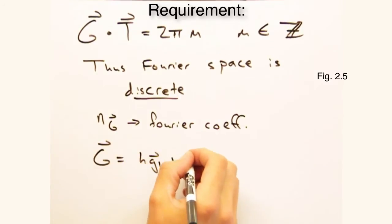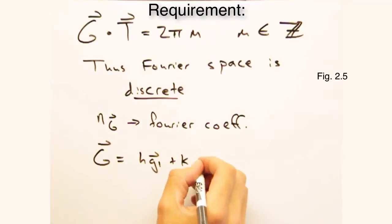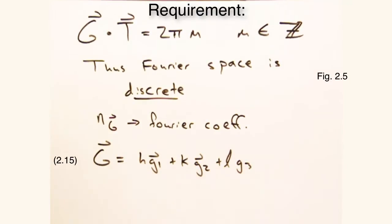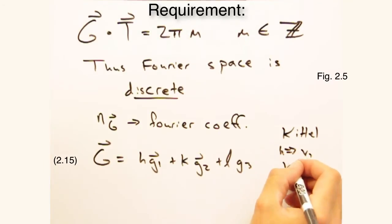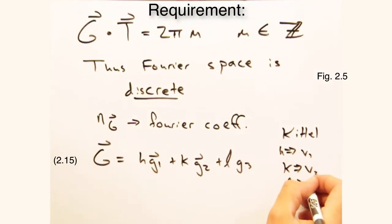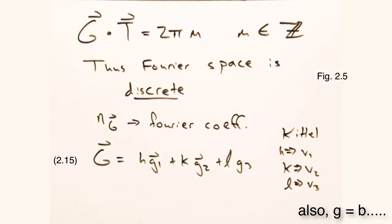Then, like our translation vector t, g is made up of three vectors, g1, g2, and g3, with integer pre-factors h, k, and l. Please note that in Kittel, these integer pre-factors are v1, v2, and v3. But nobody other than Kittel would ever use v1, v2, and v3. So we're sticking with h, k, and l in this class.